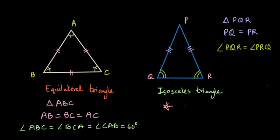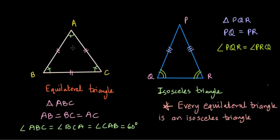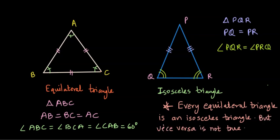There is an interesting note to share: every equilateral triangle is an isosceles triangle, because if all three sides are equal, then at least two sides are equal as well. Therefore every equilateral triangle is by default an isosceles triangle, but the vice versa is not true — every isosceles triangle is not an equilateral triangle.